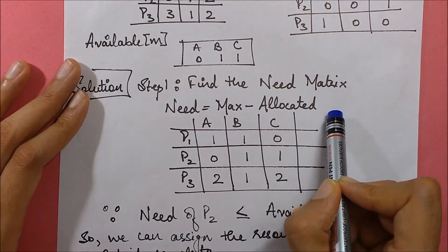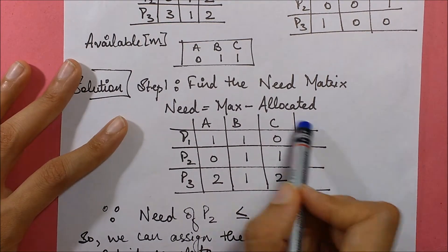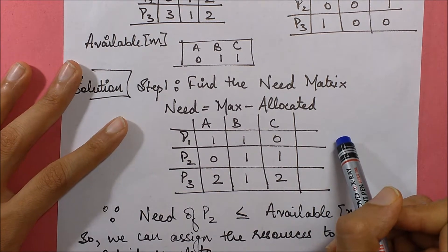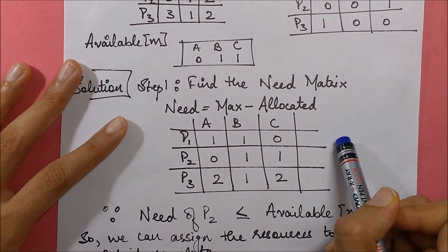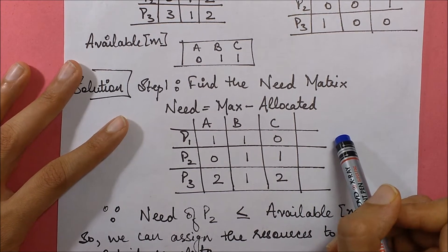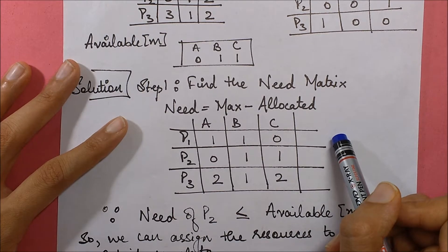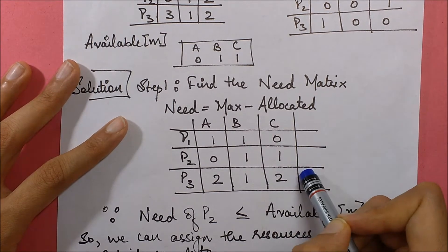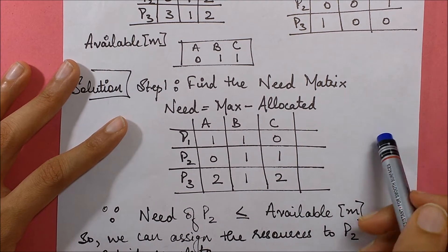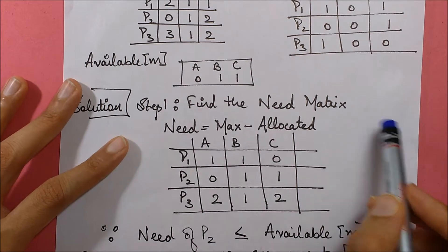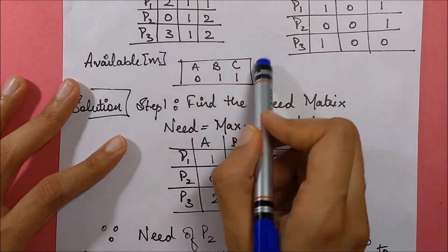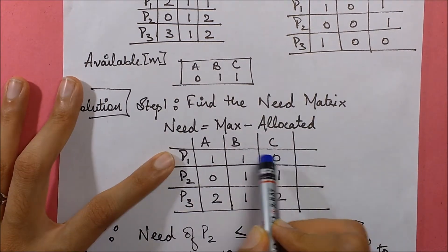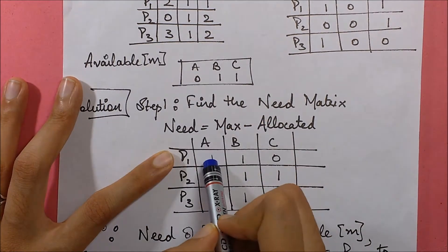The first step is to find out the need. Need equals maximum minus allocated. When we simplify this, we obtain the need matrix. Now, to find a safe sequence, we look for a process whose need is less than or equal to the available resources.